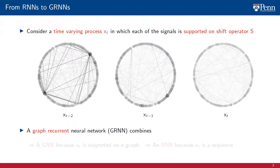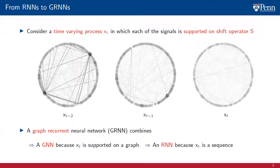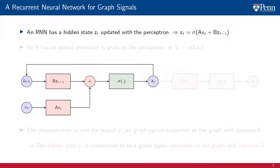A graph-recurrent neural network combines a graph neural network, because the signals Xt are supported on a graph, and a recurrent neural network because Xt is a sequence. To define a GRNN, we begin by recalling the definition of an RNN. The component of an RNN that is different from usual neural networks is a hidden state Zt that is updated according to the perceptron sigma of A*Xt plus B*Zt.